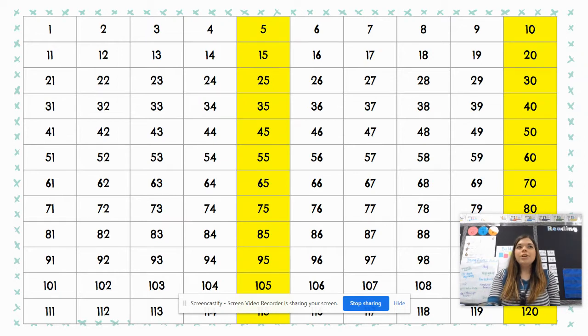Great job, here you notice I've highlighted the fives column and the tens column. You may notice that the number in the ones place stays the same and the tens changes by adding a group of ten.